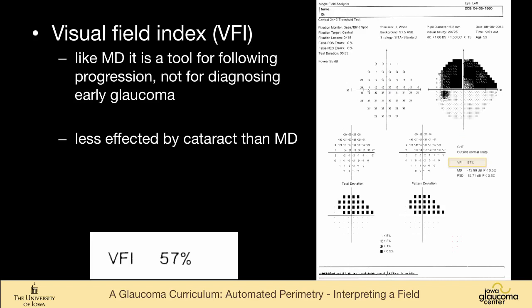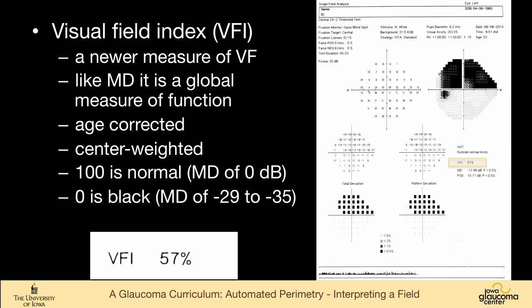And this is the field we looked at earlier with the pseudo false positive look. The visual field index is another measure of global field loss. It's like the mean deviation. It's a tool for following progression, not making the diagnosis. You can see this patient's visual field index is 57%. It's supposed to be less affected by cataract than mean deviation. And it's relatively newer.